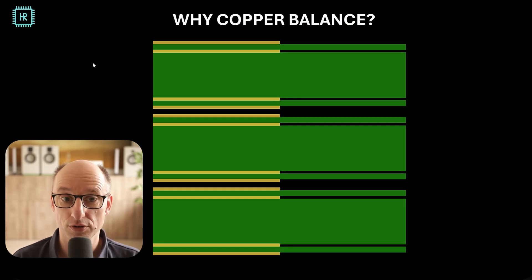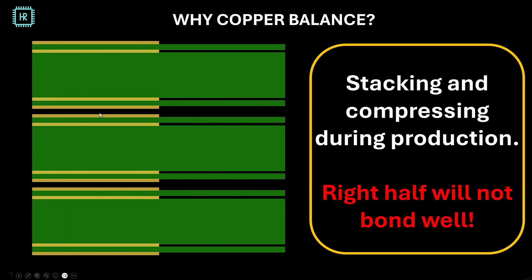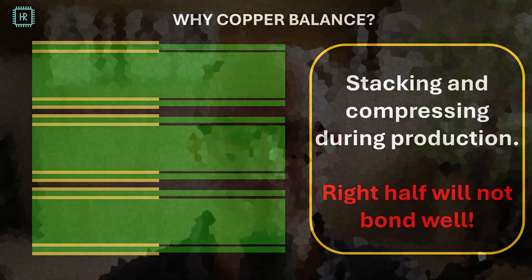Let's see why copper balance is important. Copper balance can be a problem during production. What you see here is a cross section of a board where all four layers have the left side filled with copper and the right side has no copper. During production, these boards are stacked — you see three boards stacked on top of each other — and compressed to bond all the layers together. If the right half has no copper, this will not compress and will not bond well, and this leads to your board delaminating. So if you fill up all layers with ground, you have guaranteed copper balance and never have to worry about it again.